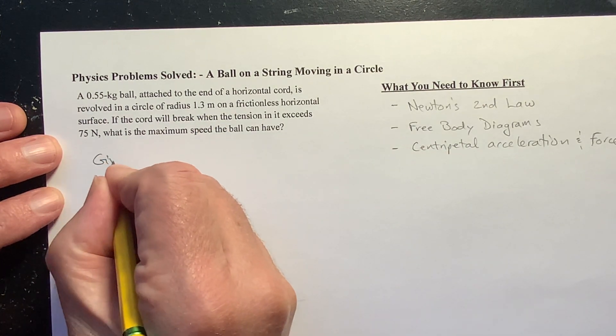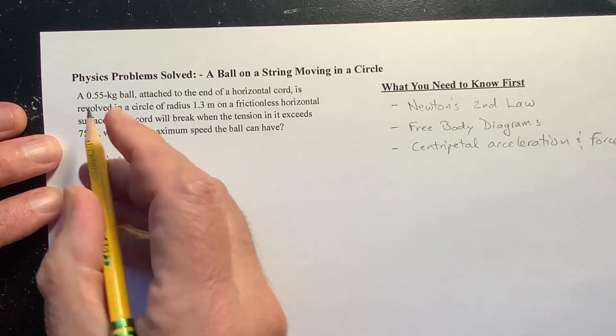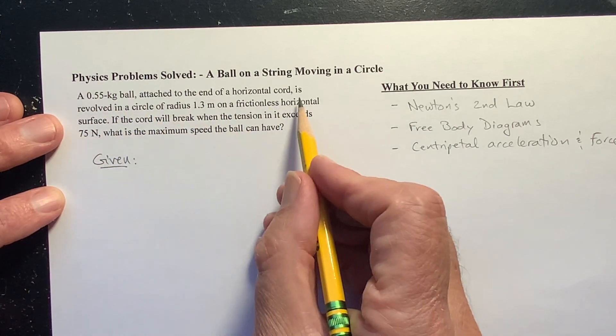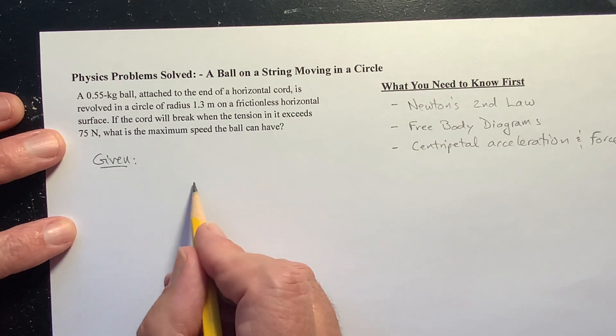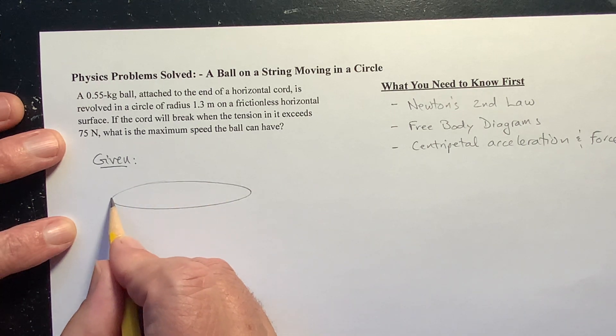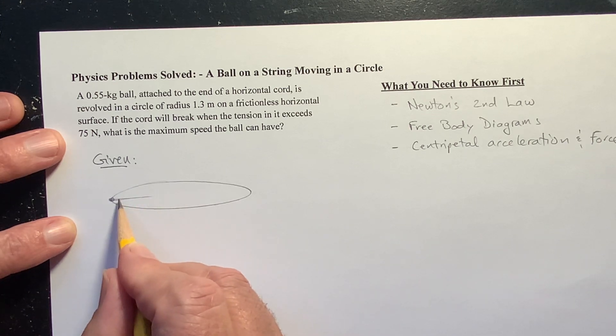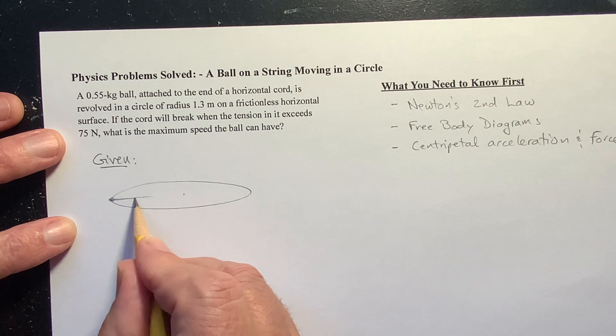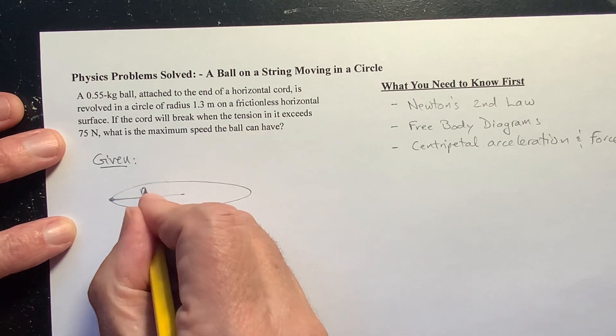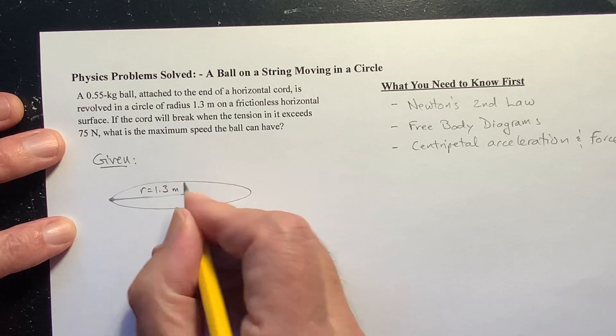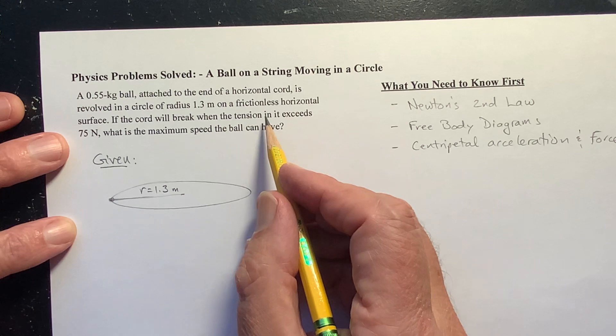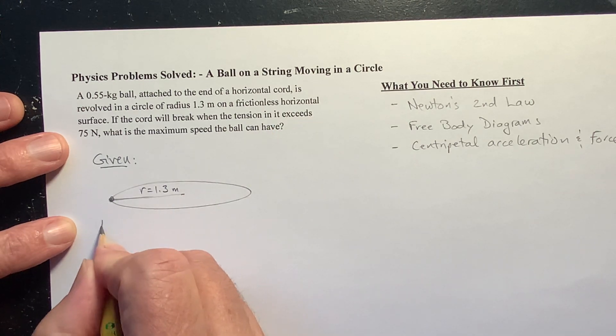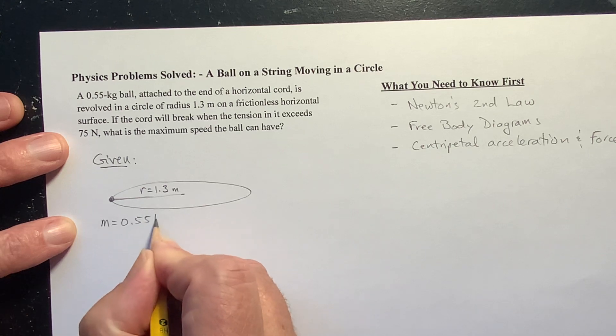Here's what's given. So we've got a 0.55 kilogram ball attached to the end of a horizontal cord, and it's revolving in a circle. So I'm going to draw it in perspective. It's a horizontal circle, and here's the ball, and we've got some kind of string on it. The radius r is 1.3 meters, and it's frictionless. The mass of this ball is 0.55 kilograms.